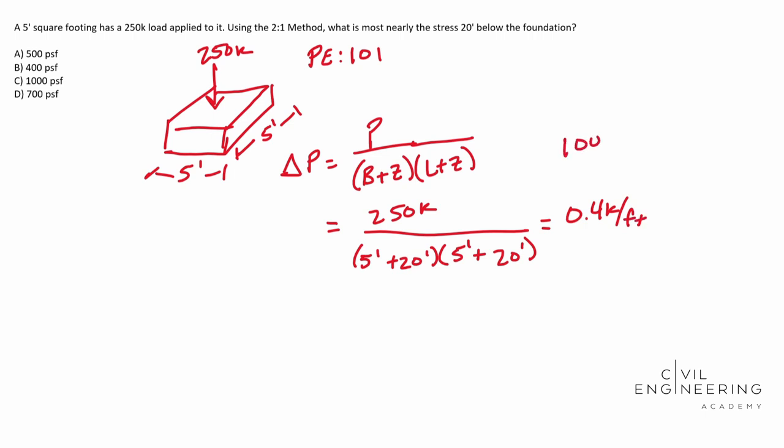We understand that 1,000 pounds is equal to a kip. And so this is actually 400 pounds per foot or PSF. And so that's going to be answer B.